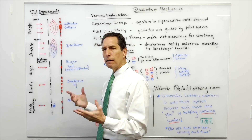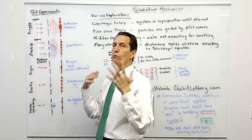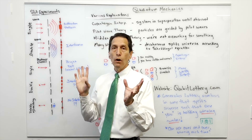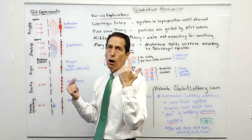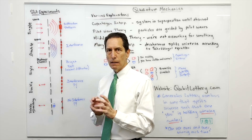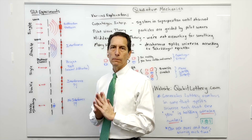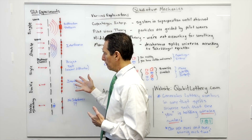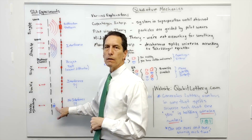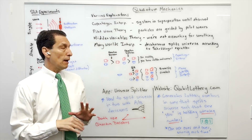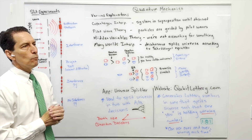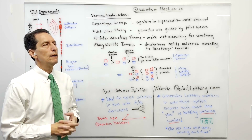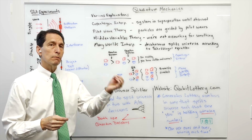They did another experiment — this is where it really got freaky. They fired the same individual electrons or photons at the double slit but added a device to observe which slit the electron or photon went through. As soon as they put the observing system in, it immediately settled to two bright spots, just as if the particle went through only one slit. The only difference between the two experiments was the addition of an observer, and that got people very freaked out.